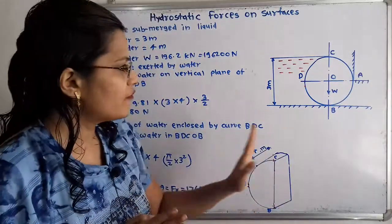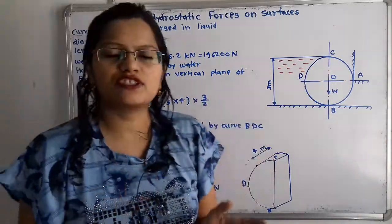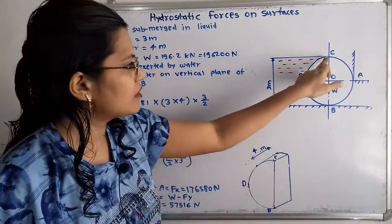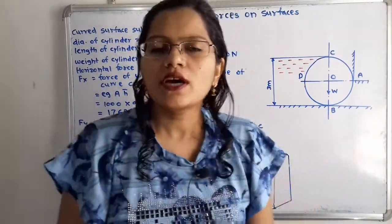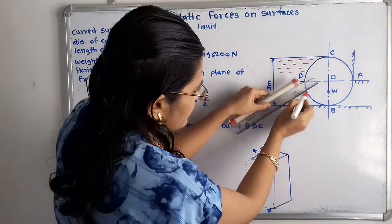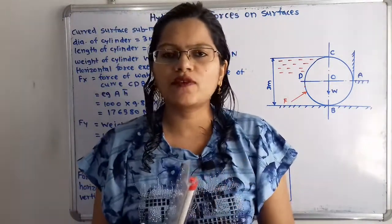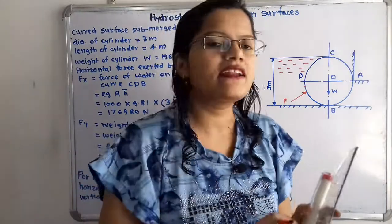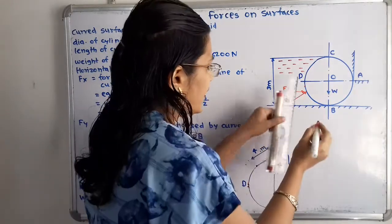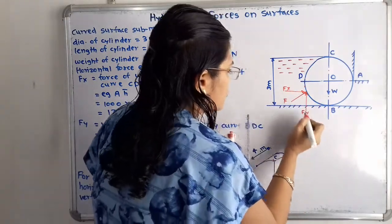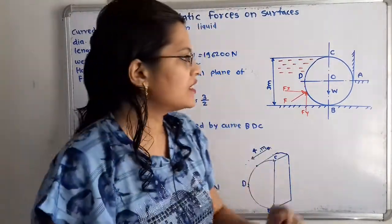Now let us understand the given diagram. The half part of this cylinder is in contact with water, so the pressure force is getting applied by the water to this curve CDB. Since this is a curved shape, the pressure force is in an inclined direction. We show this as force F. We have to resolve this force F into two components: the horizontal component FX and the vertical component FY.